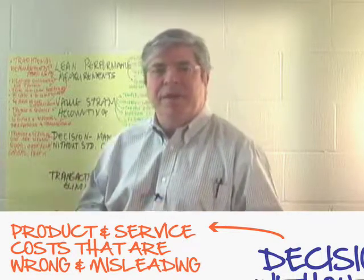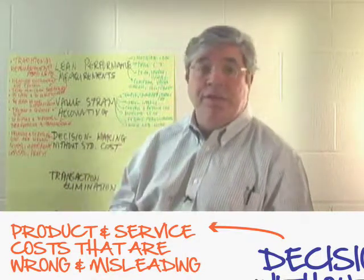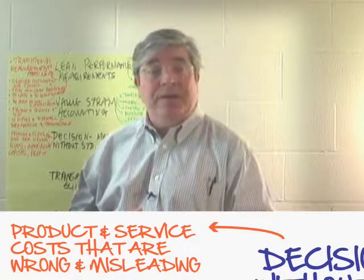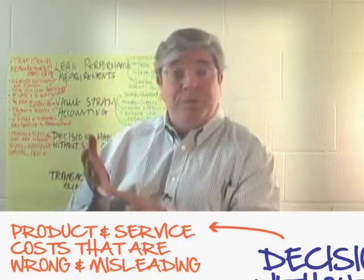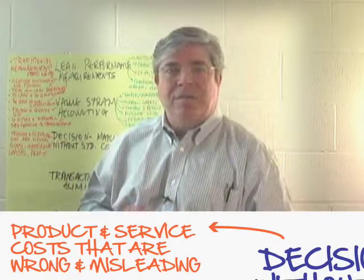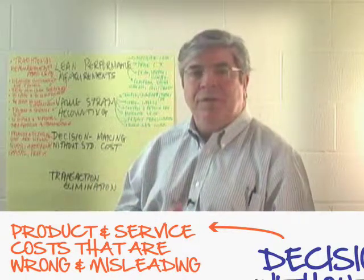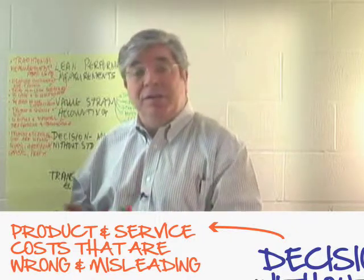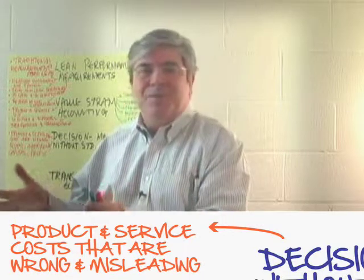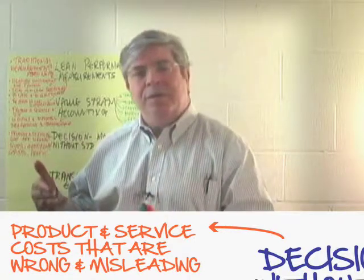We apply overhead based on labor hours or machine hours, and that just amplifies the errors. A simple example: suppose you have a factory with four product lines. Someone from corporate does a profitability analysis and says product line D is not profitable enough — we're going to outsource it to a far-east low-cost country. So they dismantle it and send it off. Now, material cost goes away, maybe a couple of people are let go, but a big chunk of cost stays. Where does that go? It gets lumped into overhead and applied to the other three products. What happens then to the profitability of those three products?